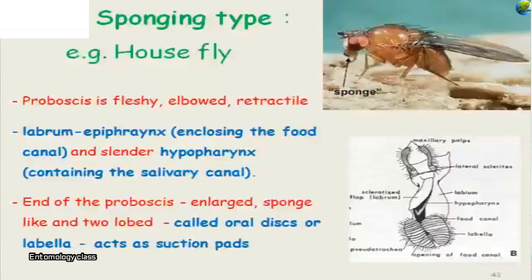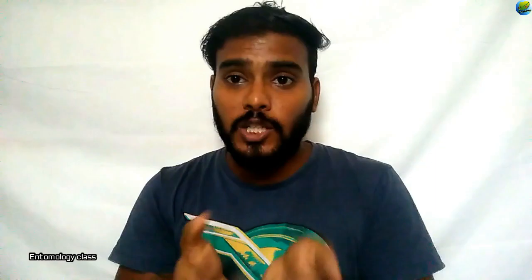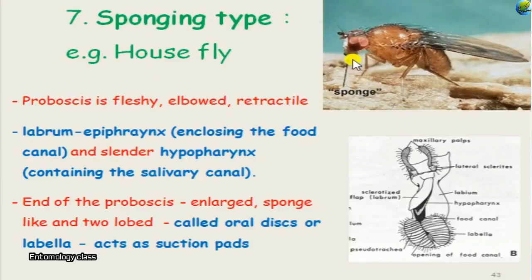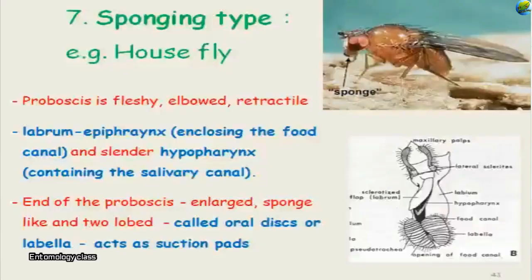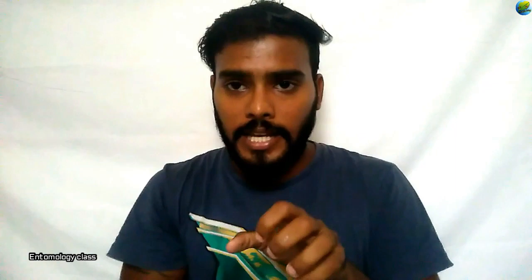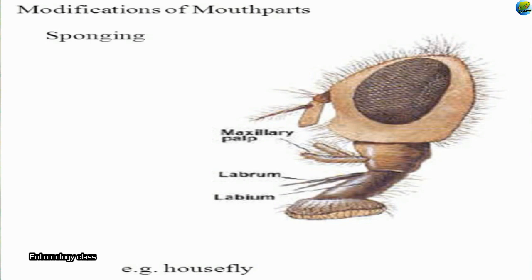In the case of house flies, they have a fleshy mouthpart made predominantly by the labium. Inside this labium, grooves contain both the food canals and the salivary canals. The food canal is formed by the labrum-epipharynx and the salivary canal by the hypopharynx. The basal area of this projection or proboscis is called the rostrum, and the distal part is called the haustellum. The end of the proboscis — the haustellum region — is enlarged into a structure called the labellum, which is sponge-like in structure.